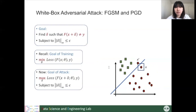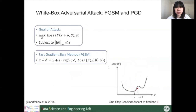To solve this problem, the FGSM algorithm tries to find the maximum point. The delta is calculated proportional to the gradient of the loss at point X, and epsilon is the perturbation budget. This one-step gradient-based method can approximate the solution for the objective function. It is already a powerful attack with a high attacking success rate on benign DNN models.